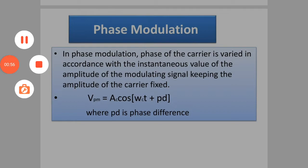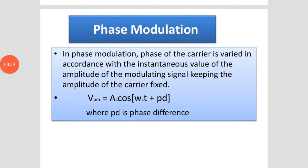In phase modulation, the phase of the carrier is varied in accordance with the instantaneous value of the amplitude of the modulating signal, keeping the amplitude of the carrier fixed. VPM is equal to AC cos(ωct + PD), where PD is the phase difference.